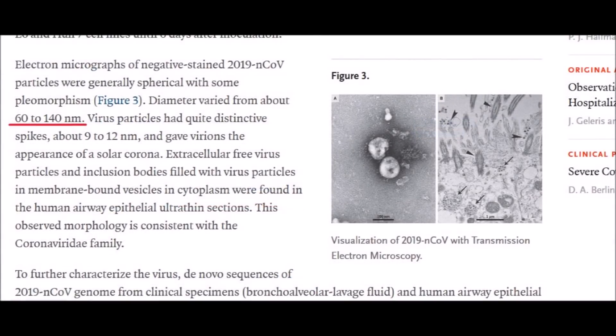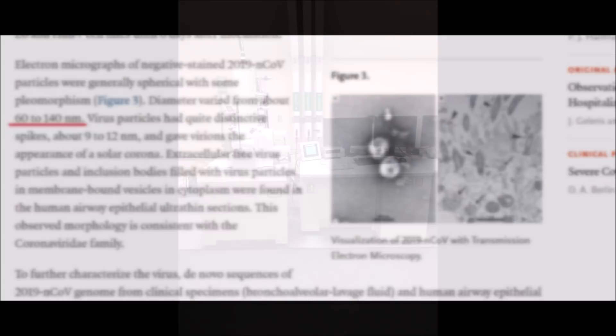The SARS-CoV-2 virus is between 60 to 140 nanometers in diameter, which is very tiny and below the 200 nanometer resolution threshold. So if I had a sample of the coronavirus under my light microscope, I wouldn't be able to see it.